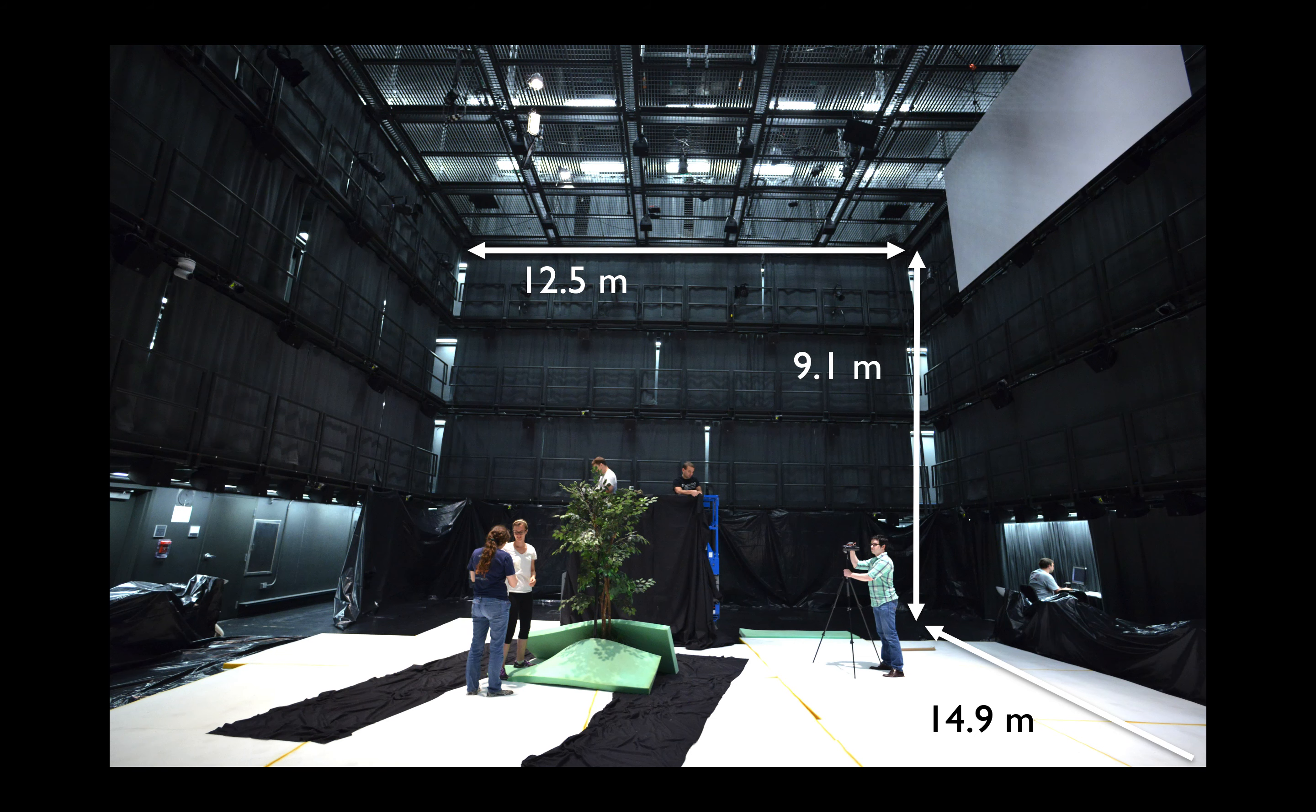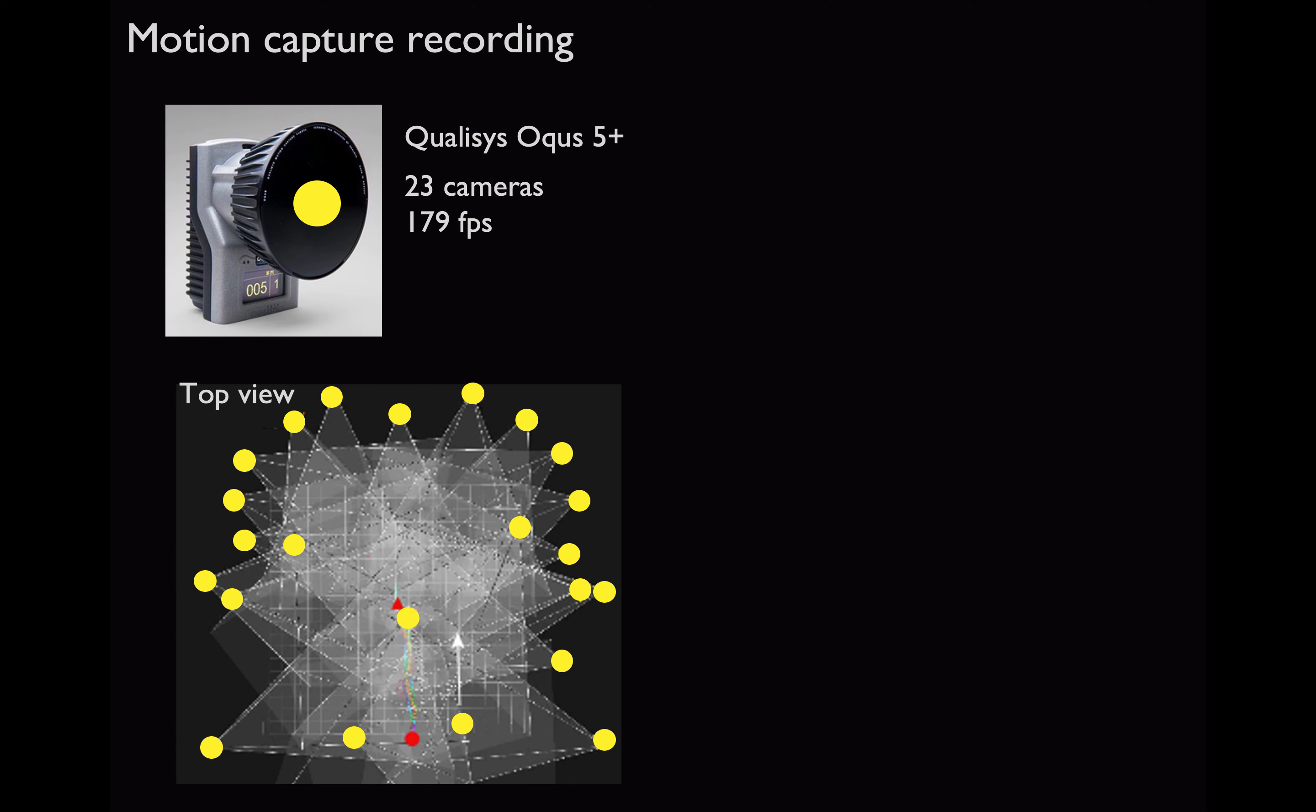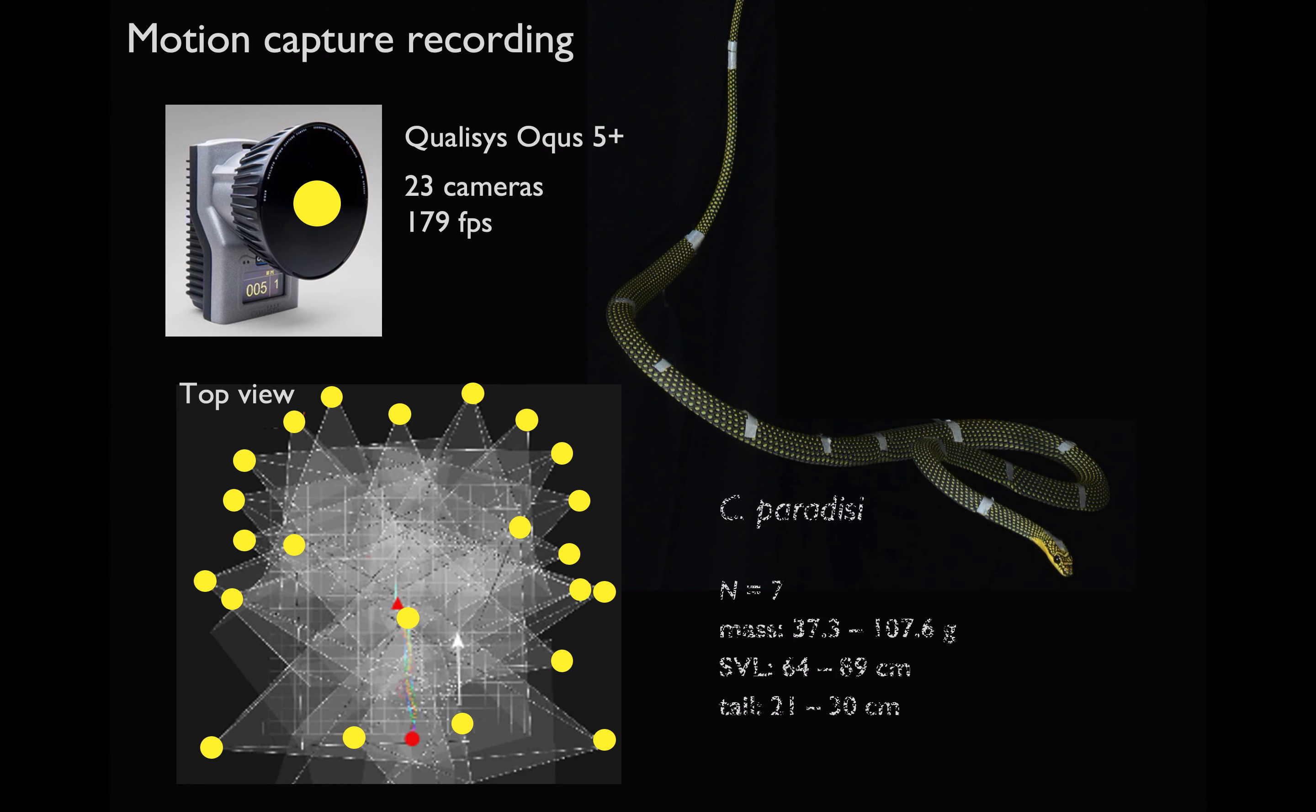For these experiments, we used a large indoor arena at Virginia Tech. We would bring snakes to a height of about 8 meters and have them jump and glide to the floor. We configured the glide arena with a 23 camera high speed motion capture system. For seven snakes, ranging in size, we recorded between 11 and 17 infrared markers placed along the dorsal surface.